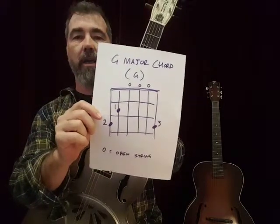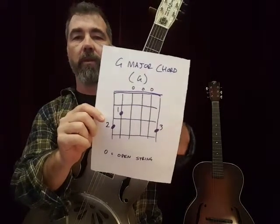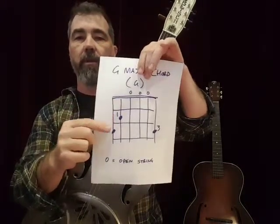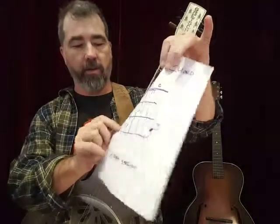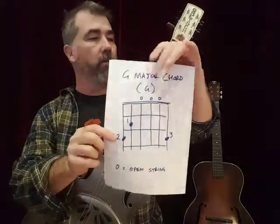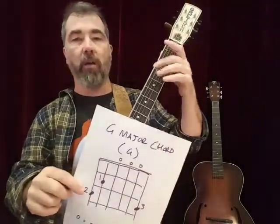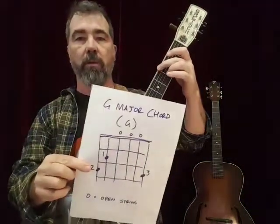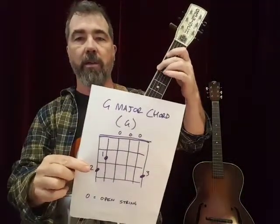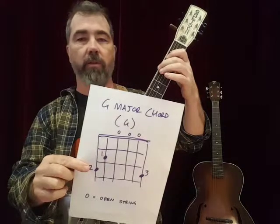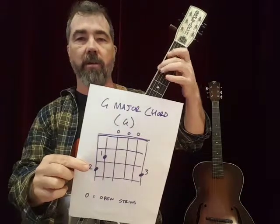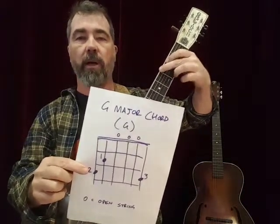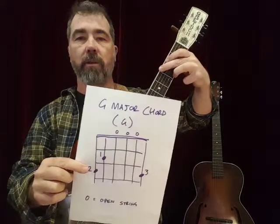So this is saying the low E string, not at the first fret, not at second, but at the third fret and I should have finger 2. So I'm going to use my second finger on the low E string. The A string is at fret 2 with the first finger, and then the third finger is going all the way over to the high E string.